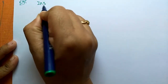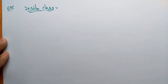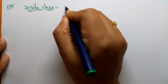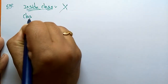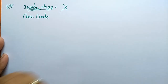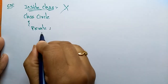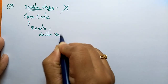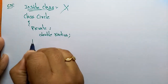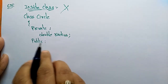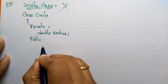Let us take first the inside class definition example. Inside the class, there is no need for the scope resolution operator. The syntax is: class Circle. The access specifier is private, and I am using the data member double radius. So radius is the data variable, with data type double.